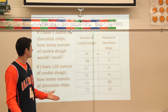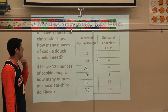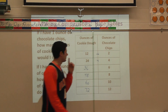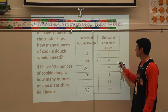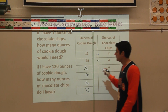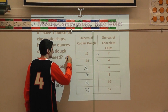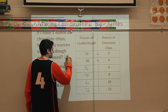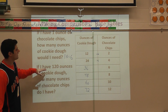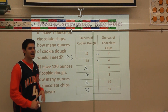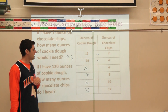Let's analyze the questions. If I have one ounce of chocolate chips, how many ounces of cookie dough? I know I multiply by 6. Starting with 1, times 6 equals 6. So I would need 6 ounces of cookie dough. Don't forget to put the unit right on your answer.